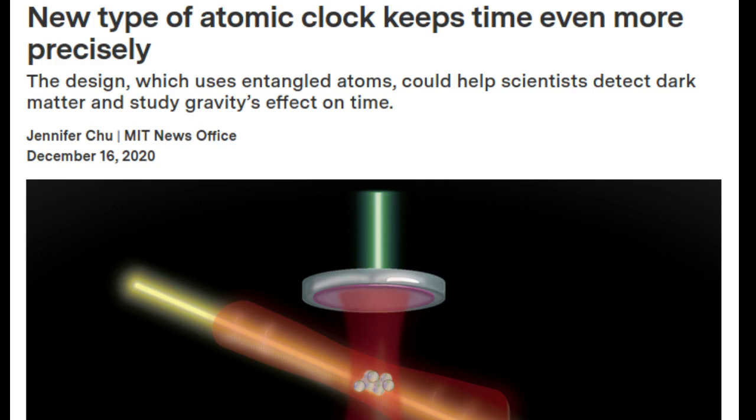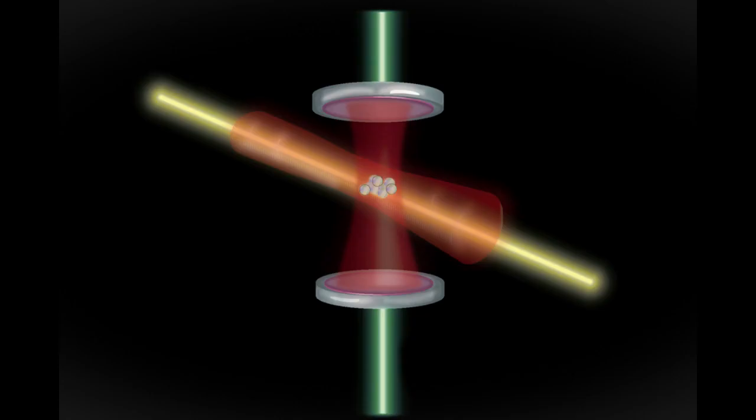The best atomic clocks in the world keep time with such precision that if they had been running since the beginning of the universe, they would only be off by about half a second today. Still, they could be even more precise.